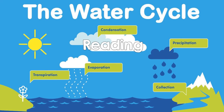The water vapors that are formed cool during evaporation. These cooled water vapors form clouds in the sky. The transformation of the vapor into clouds — that is, from a gas into a liquid — is called condensation.